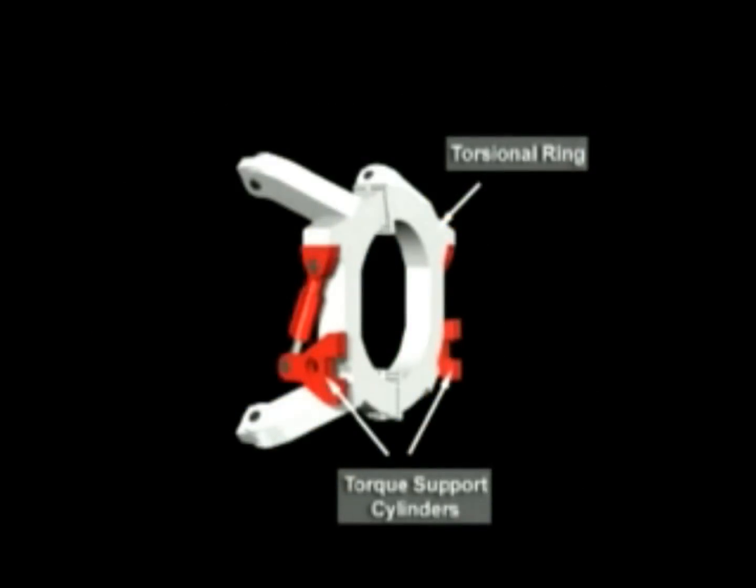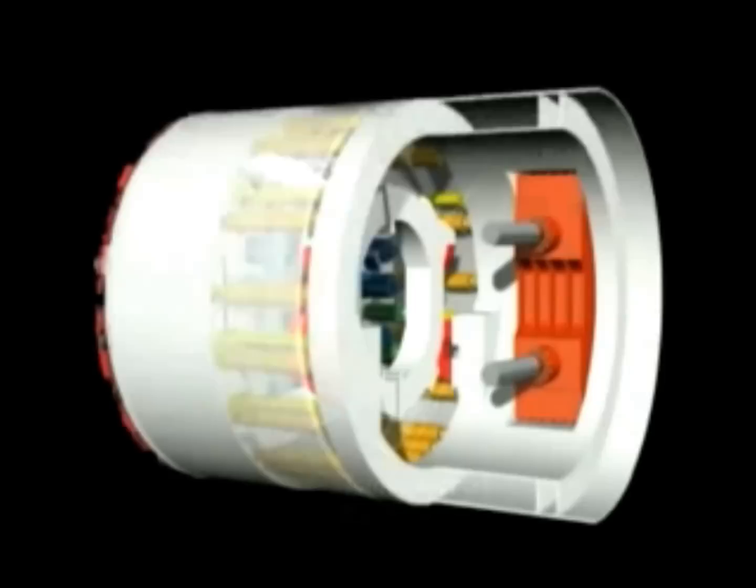The thrust forces working in the longitudinal direction of the tunnel are produced by the main thrust cylinders, which connect the steel structure of the front shield and the gripper shield.